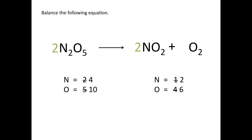Since I changed the number of nitrogen atoms on the reactant side, I'll go back and balance nitrogen by changing the 2 in front of NO2 on the product side to a 4. That gives us four nitrogen atoms on the product side. This also changes the oxygen count: eight from the four NO2 molecules plus two from the O2 gives a total of ten oxygen atoms — matching the reactant side. The equation is now balanced.